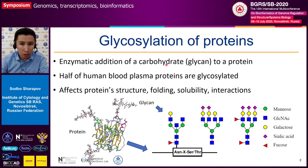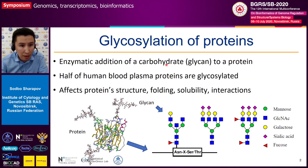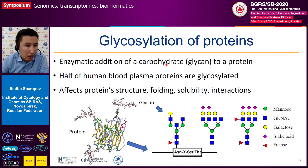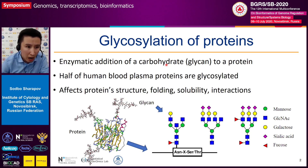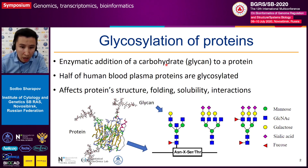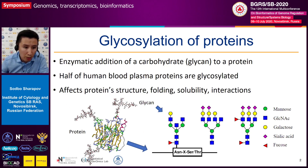To begin with, glycosylation is an enzymatic addition of carbohydrates, so-called glycans, to a protein. Glycosylation is one of the most common and important post-translational and co-translational modifications of proteins. It is known that more than half of all human blood plasma proteins are glycosylated. On the slide, you can see a typical glycoprotein where we have a glycan attached to the amino acid backbone of the protein.